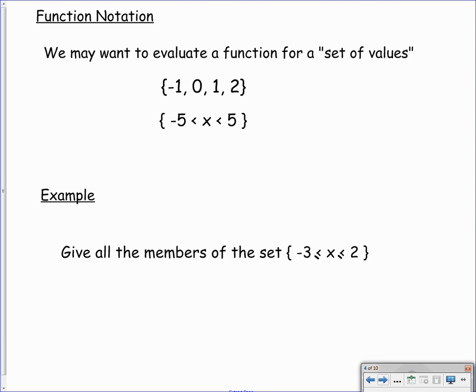A little example at the bottom here. We want to give all the members of the set negative 3 is less than or equal to x, which is less than or equal to 2. So that means all the numbers that are in between negative 3 and 2, and including negative 3 and 2, because we have our less than or equal to signs. So if we wanted to write all the members of that set, we would start at negative 3, negative 2, negative 1, 0, 1, and 2, or all the numbers which are members of that set.